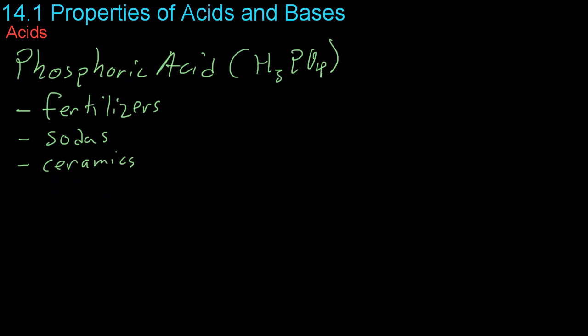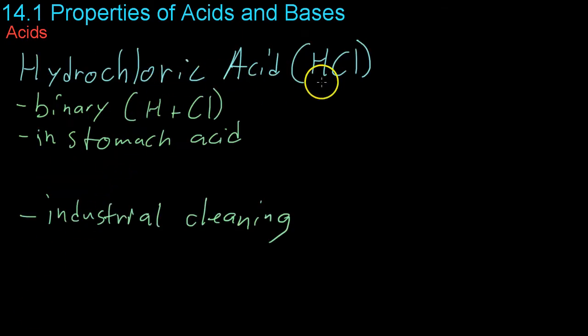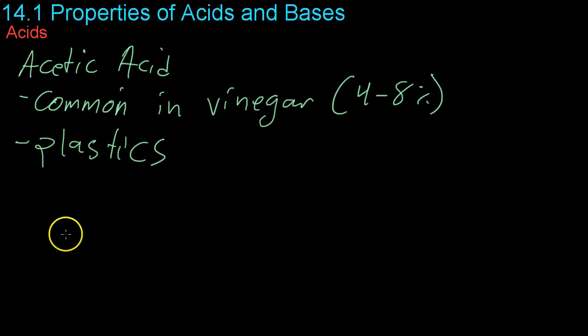So hydrochloric acid which has the formula HCl is a binary acid because it combines only hydrogen and chlorine and this is the main component of your stomach acid that helps dissolve food into its constituent parts. It's also used in some magnesium recovery from the sea as well as in industrial cleaning.